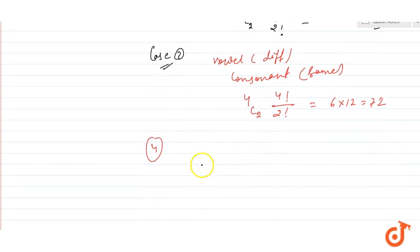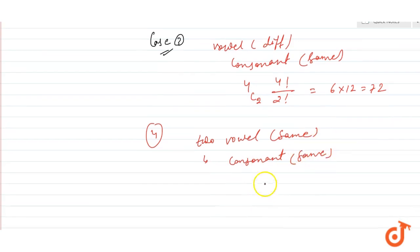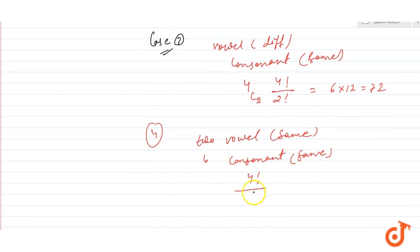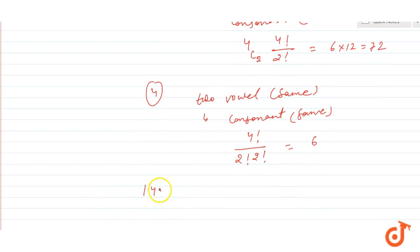Case 4: The vowels are same and the consonants are same. The vowels are same - 2A and 2T. So 4 factorial upon 2 factorial 2 factorial. Answer is 6.